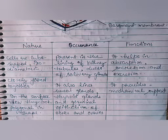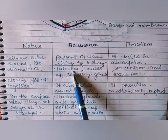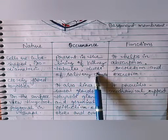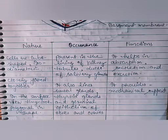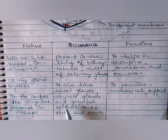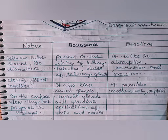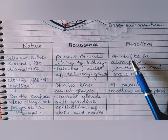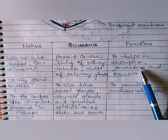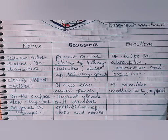Cuboidal epithelium is present in the lining of kidney tubules, ducts of salivary glands, sweat glands, thyroid glands, and germinal epithelium on the testes and ovaries. Its function is to help in the absorption, secretion, and excretion of substances, and it also provides mechanical support.